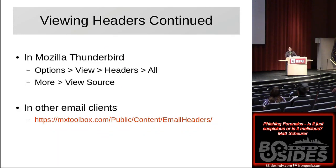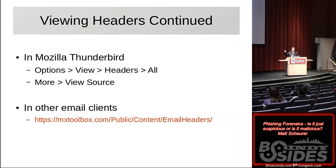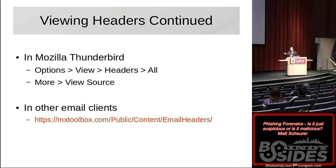Some other email clients: Mozilla Thunderbird is pretty popular and is the one I'm going to show in the demo. You would go to the options menu, view, and select headers and all — or optionally go to the more menu and click on source. There are a lot of email clients, including webmail-based clients. MX Toolbox makes it simple to find instructions for your specific email client. The one thing that's still difficult is if the email comes in and the recipient only has access to a mobile mail client — unfortunately those don't really let you see the headers.